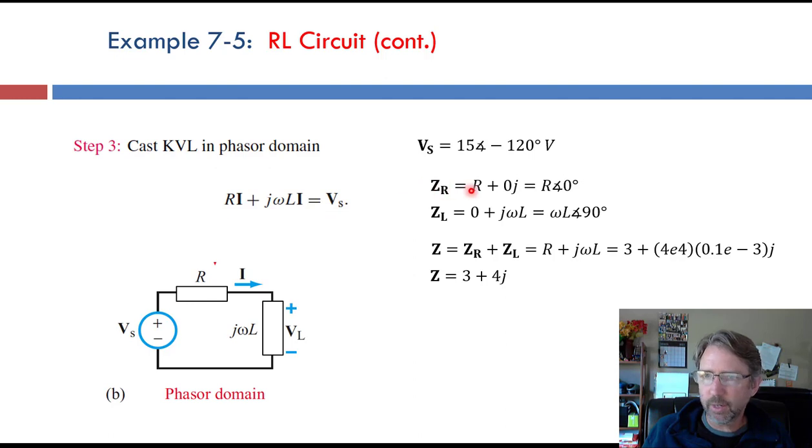ZR is R, or we could write it as R plus zero j, that's the rectangular form, or R with a phase of zero degrees, that's the polar form. ZL, the inductance impedance, is j omega L, or zero plus j omega L, this is the real part and the imaginary part, or omega L with a phase of positive 90 degrees.